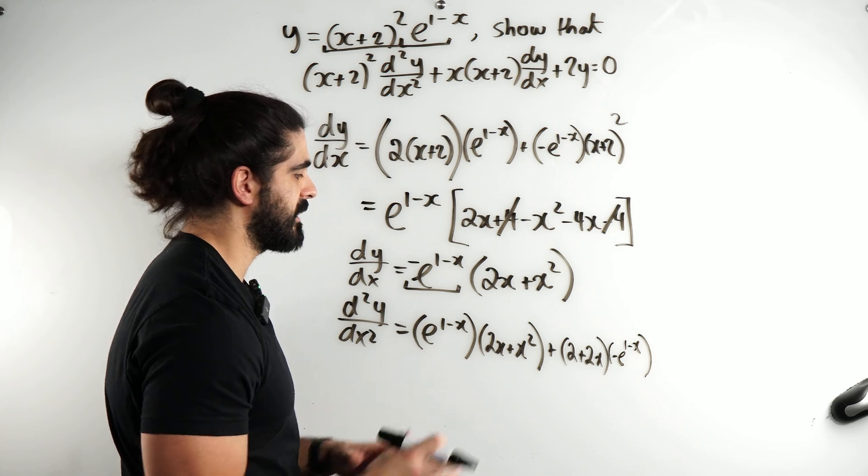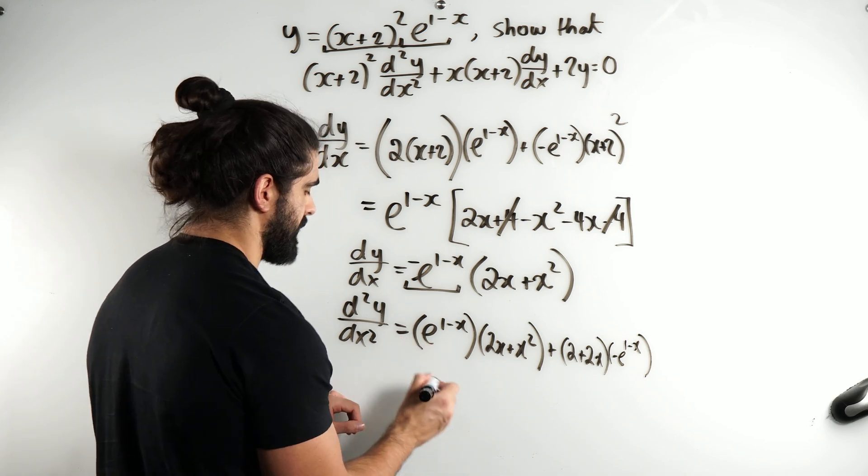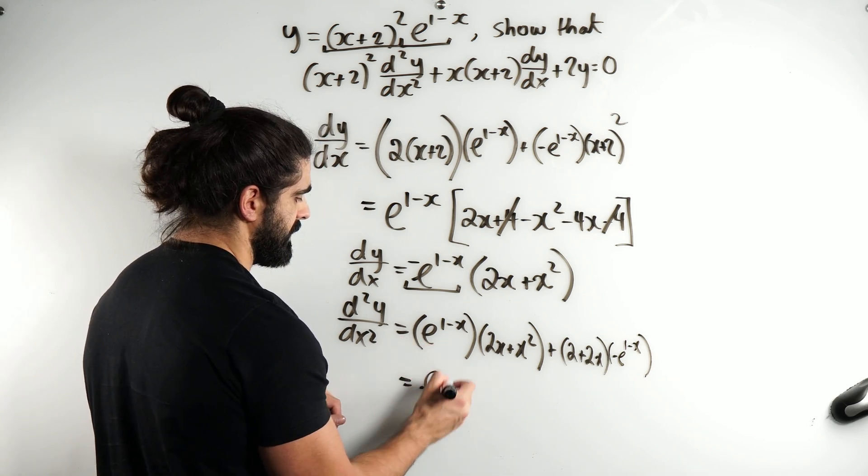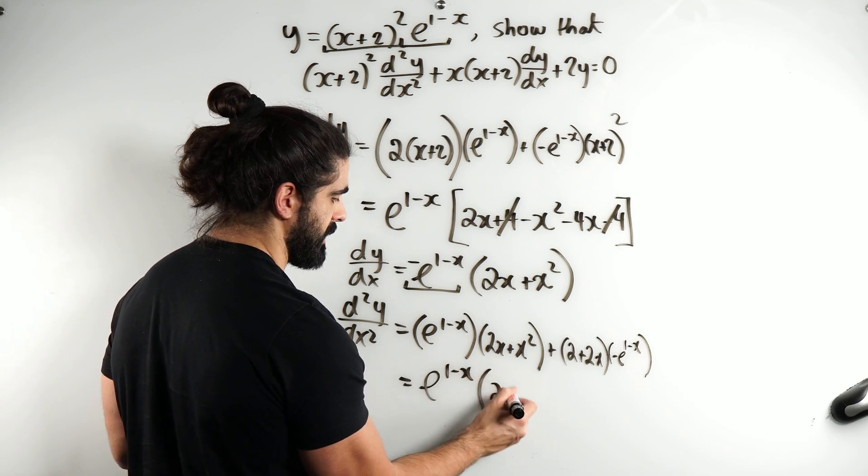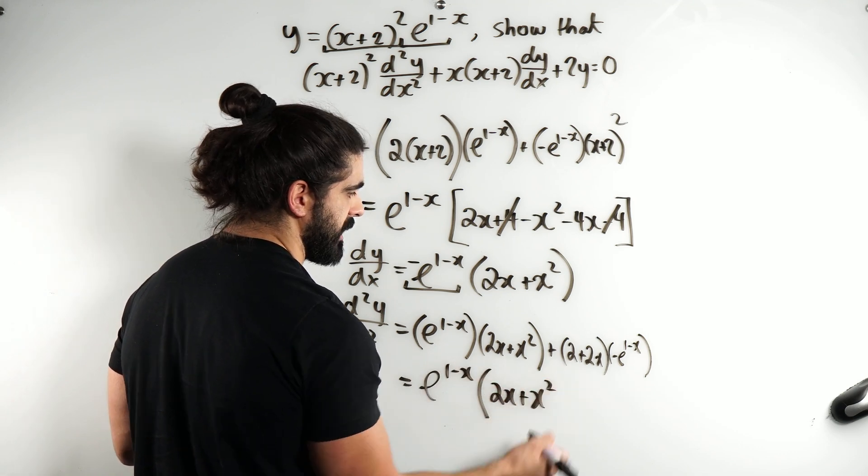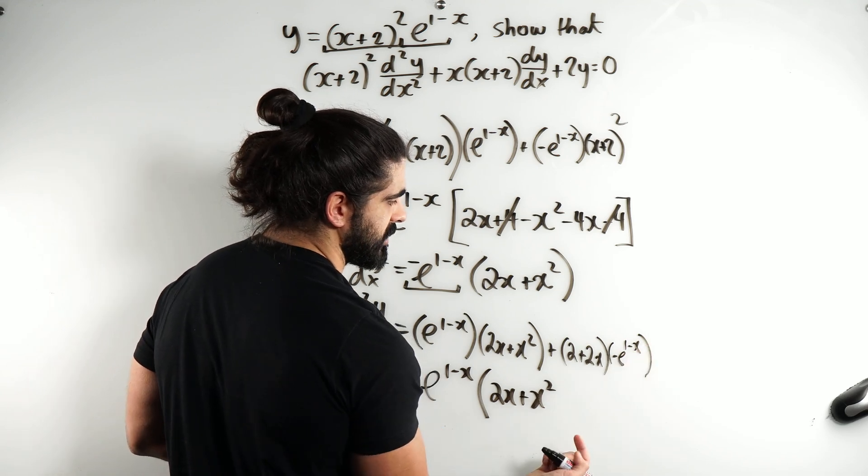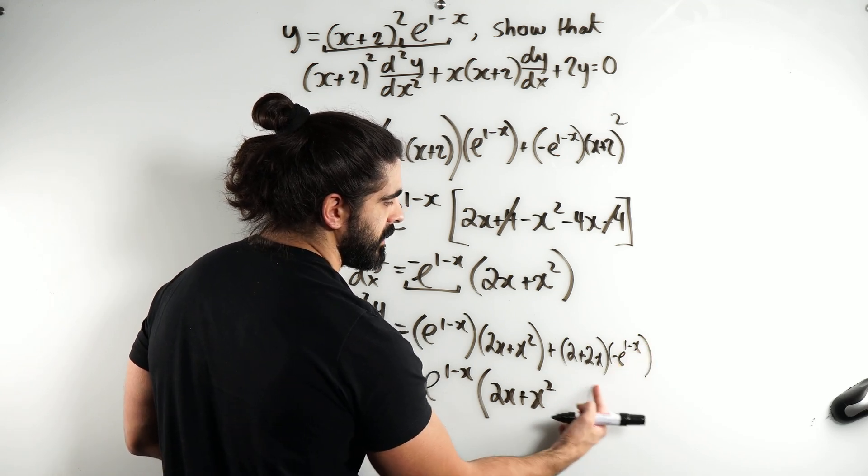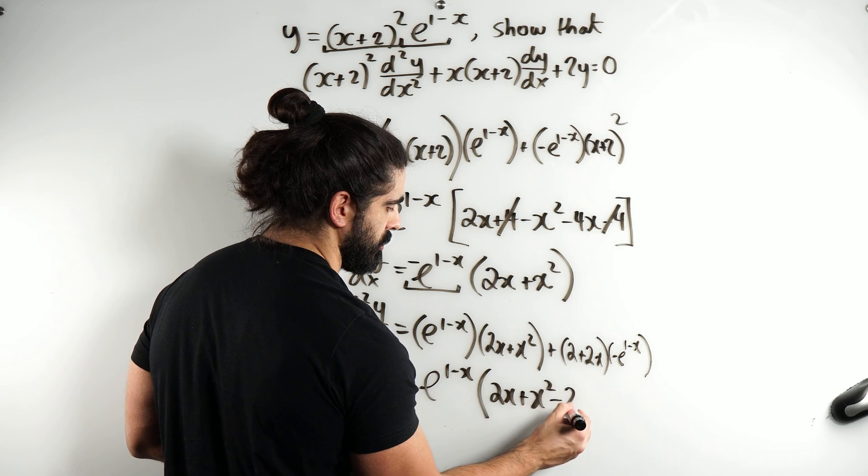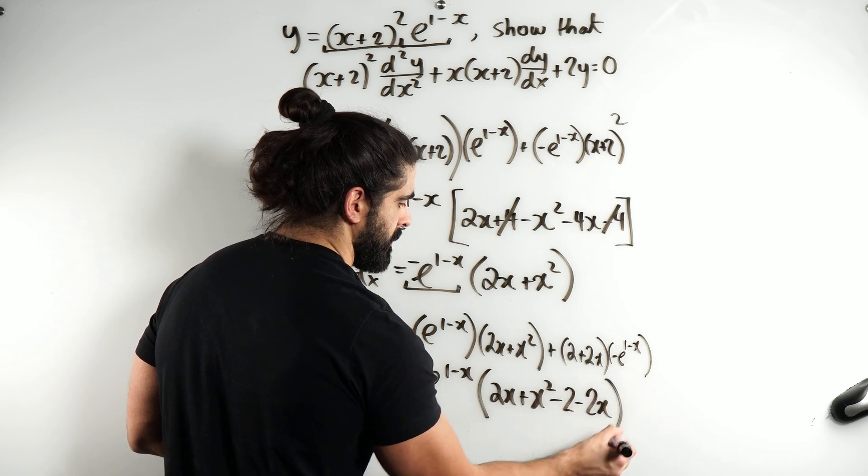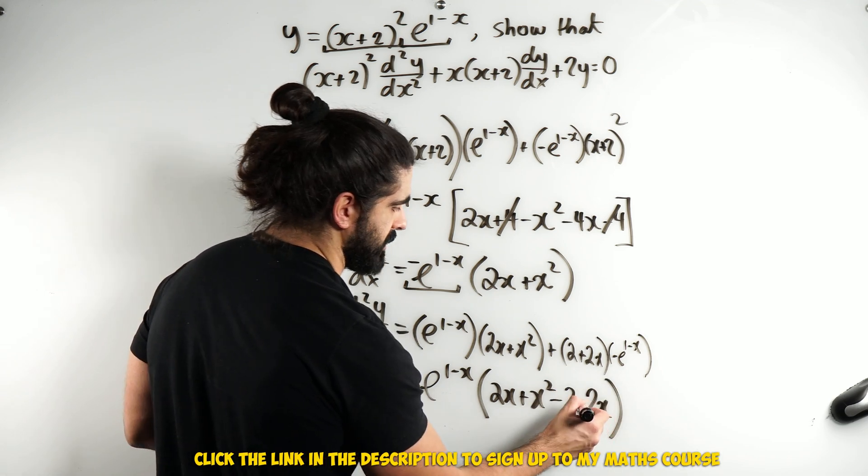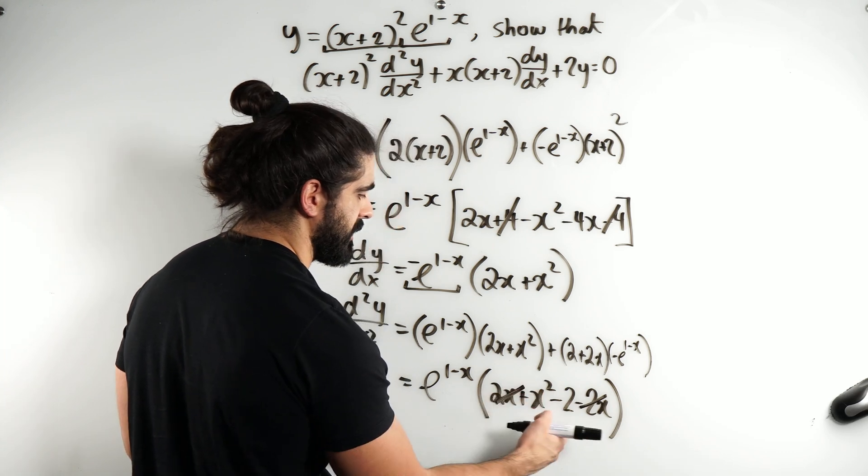Again, I'm going to factorize the e to the 1 minus x. So, I get e to the 1 minus x. I'm left with 2x plus x squared. Now, since I take out this e to the 1 minus x, that negative 1, I'm going to multiply it in. So, I get minus 2 minus 2x, which is beautiful, because this cancels with this and we're left with x squared minus 2.